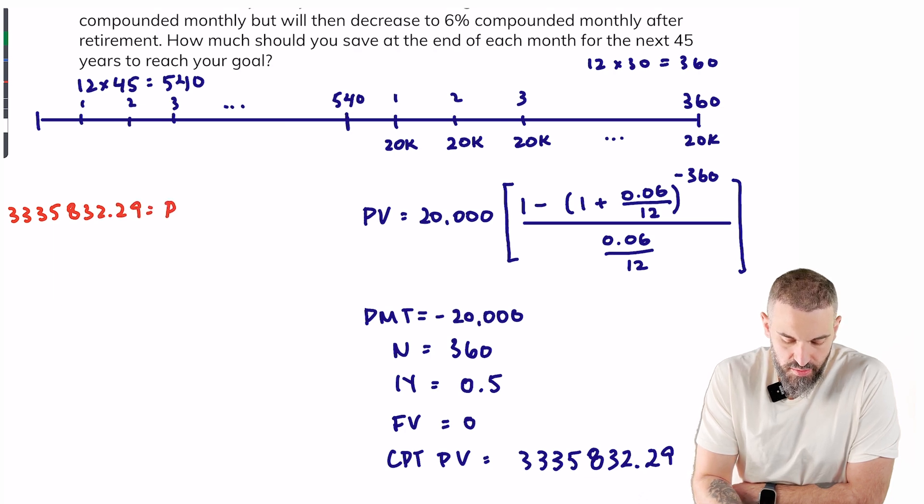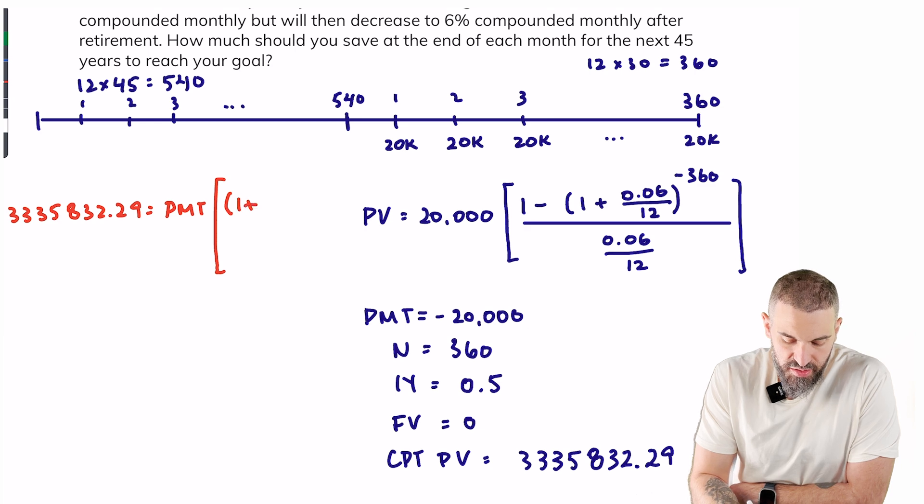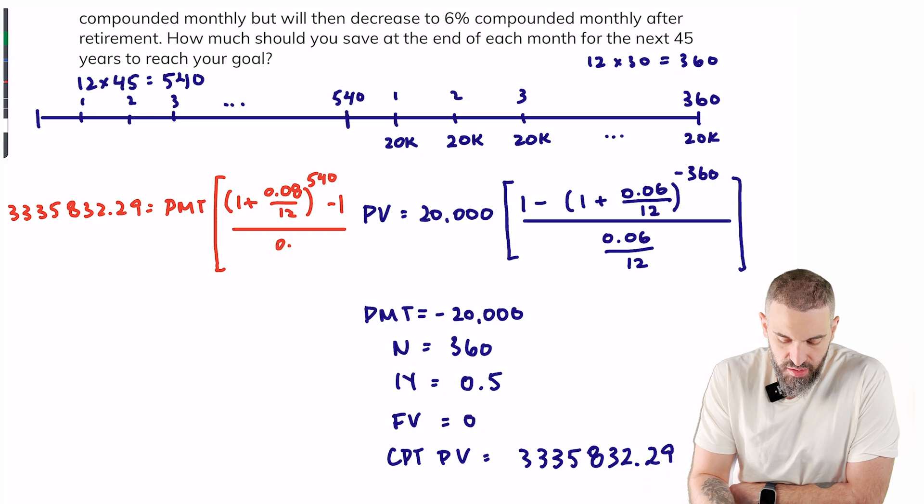So I'll set the future value equal to the payment multiplied by, and I'm using the future value of an ordinary annuity formula, (1 plus 8% divided by 12) to the power of 540 minus 1, over 0.08 divided by 12.